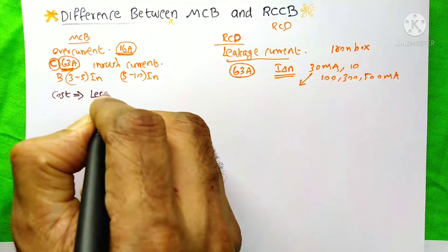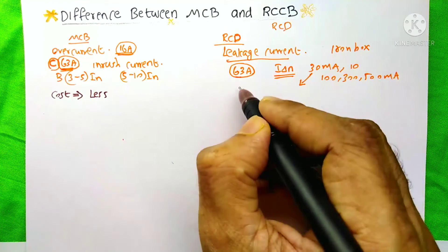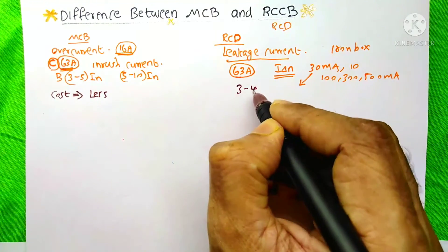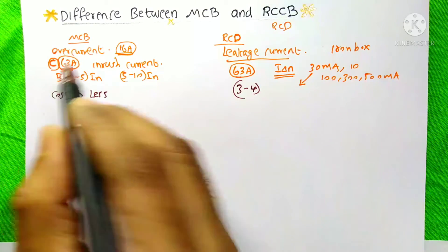The cost of this MCB is less, but about this RCD, its cost will be around 3 to 4 times than the MCB.